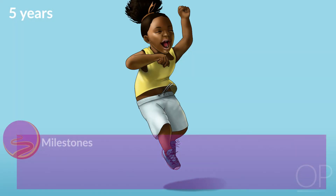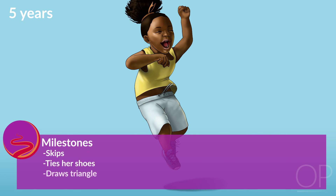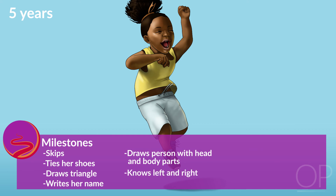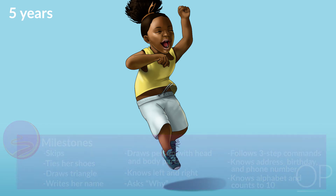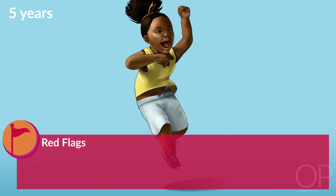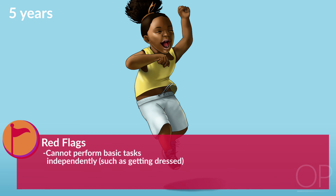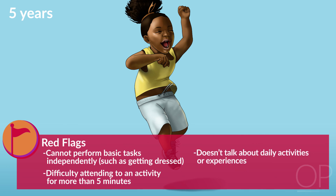Five years: As she prepares to enter kindergarten, she is skipping and tying her shoes. She can draw a triangle and print her first name. She draws a person with head and body parts and knows her left from her right. She is ever curious, asking questions about what a word means or why we do things. She can follow a three-step command and knows her address, birthday, and phone number, and answers more complex why questions. She can name the alphabet and count to ten. Red flags at five years include cannot perform basic tasks independently such as getting dressed, difficulty attending to an activity for more than five minutes, not talking about daily activities or experiences, or extreme behavior — unusually fearful, aggressive, shy, or sad.